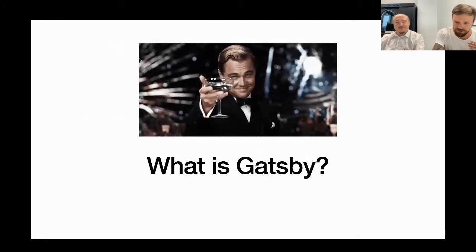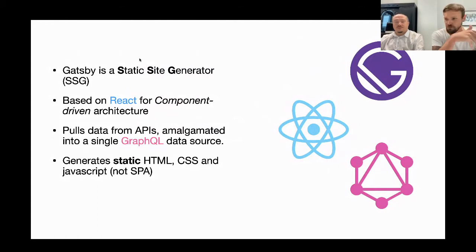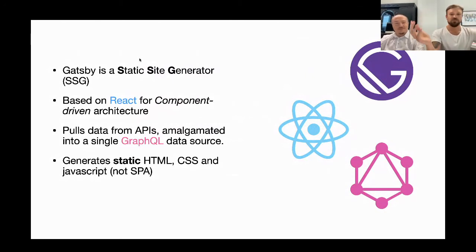So what is Gatsby? From a front-end perspective, Gatsby is a static site generator — SSG. There are quite a few of them: Next.js, Jekyll, Hugo, and more coming out every week. Gatsby is based on React, which is great for component-driven architectures. At build time, Gatsby pulls data from APIs — it could be Drupal, Contentful, WordPress, Shopify, even Spotify — via plugins. It puts all this data into one GraphQL API which front-end developers can query to build interfaces and components. Gatsby generates static HTML, CSS, and JavaScript — we're using Node.js to turn React into HTML, CSS, JavaScript.